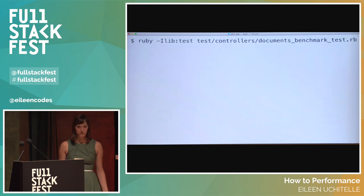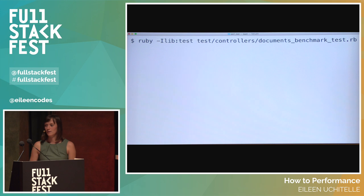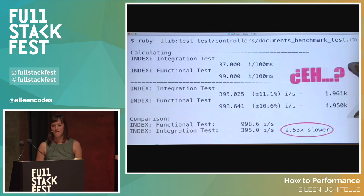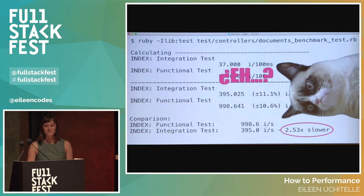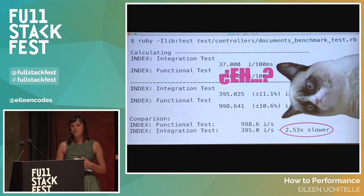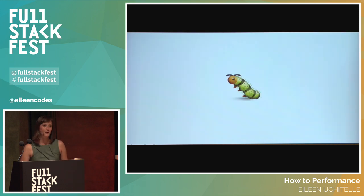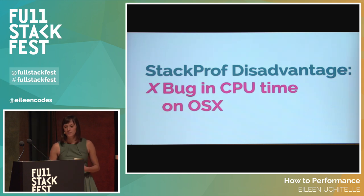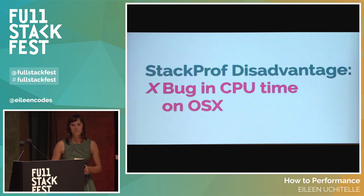When we run this, we can see that — it's still 2.53 times slower. It hasn't improved at all. After a little bit of research and consulting the creator of StackProf, we found out that there's a little bug in OSX that causes CPU time to be completely inaccurate and not correctly profile the code. This is something to remember if you're using StackProf or any other profiler that defaults to CPU time. Linux doesn't have this issue, so you're free to use CPU mode with StackProf on that OS. Just don't use it on OSX.